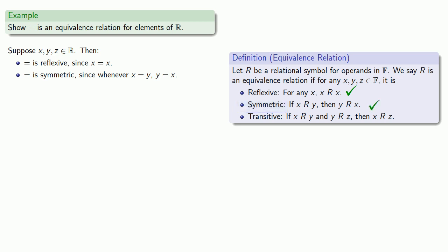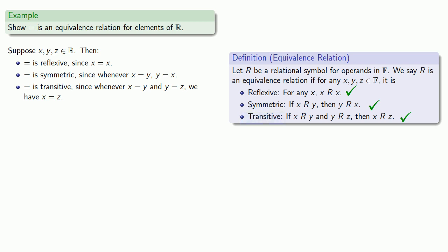And finally, equals is transitive, since whenever x is equal to y and y is equal to z, we have x equal to z — and that means our third requirement is met. Which means that equals is an equivalence relation, and it can be let into the club.